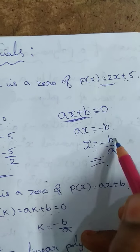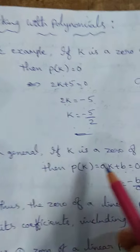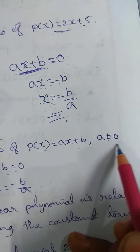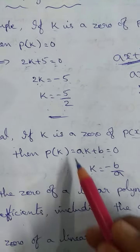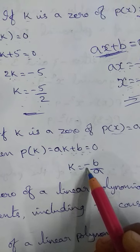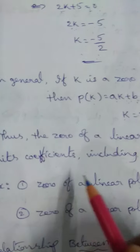So we can use the formula below for the zero of a linear polynomial. In general, if k is a zero of p(x) = ax + b, where a ≠ 0, then p(k) = ak + b = 0, giving k = -b/a. Thus the zero of a linear polynomial is related to its coefficients including the constant term.